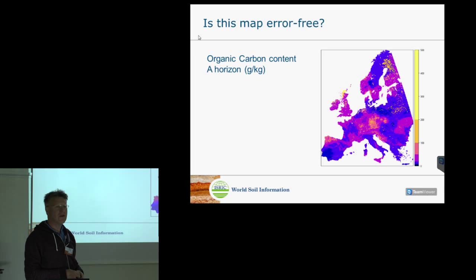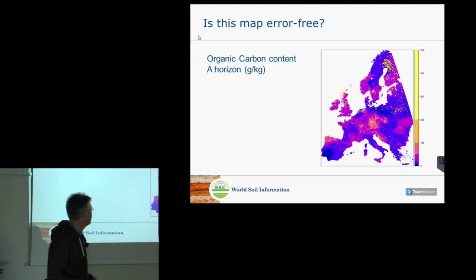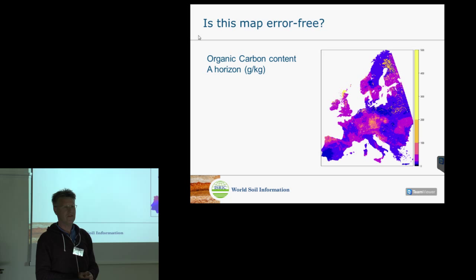Here is a map of organic carbon content of the A horizon that we produced some time ago. Is this map error free? I think in an ideal world it would be, but we all agree it is not. If we checked at any location whether the predicted value agrees with the true value we could measure, we would certainly find differences.